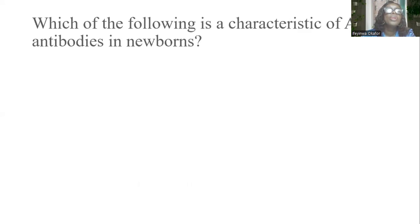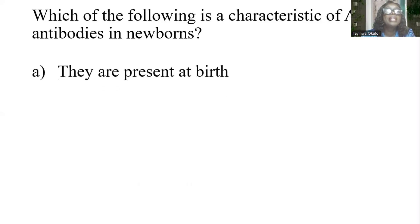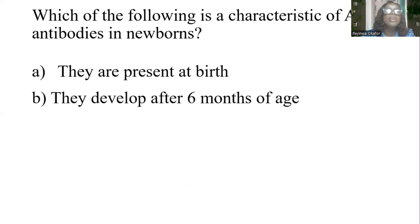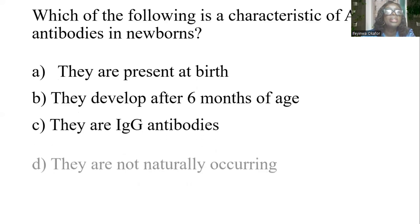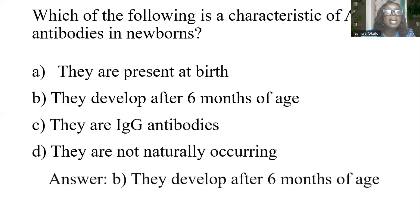Which of the following is a characteristic of ABO antibodies in newborns? A) They are present at birth. B) They develop after six months of age. C) They are IgG antibodies. D) They are not naturally occurring. The answer is B: they develop after six months of age.